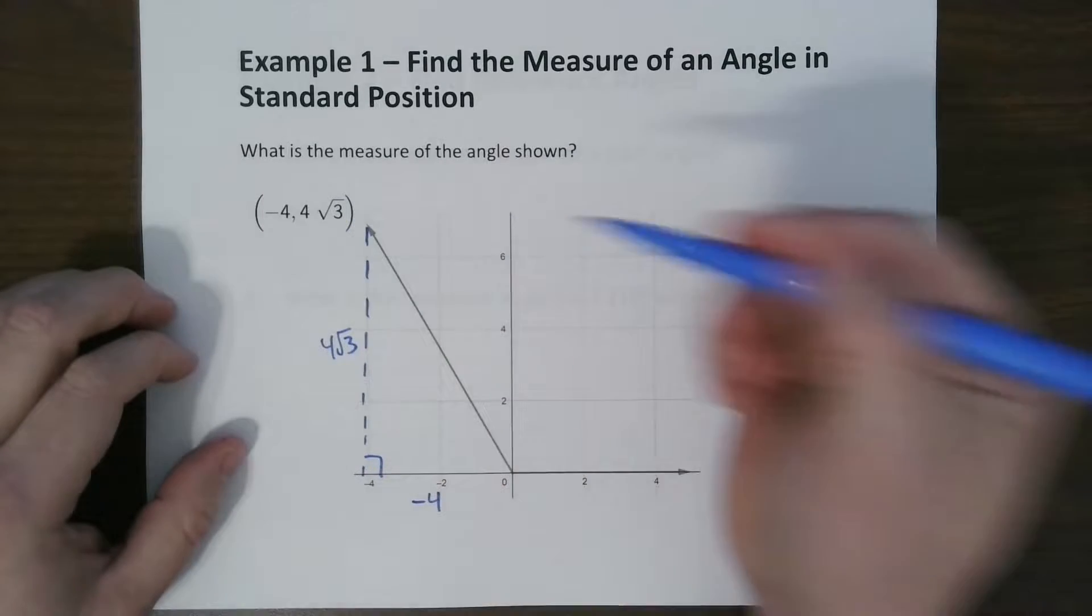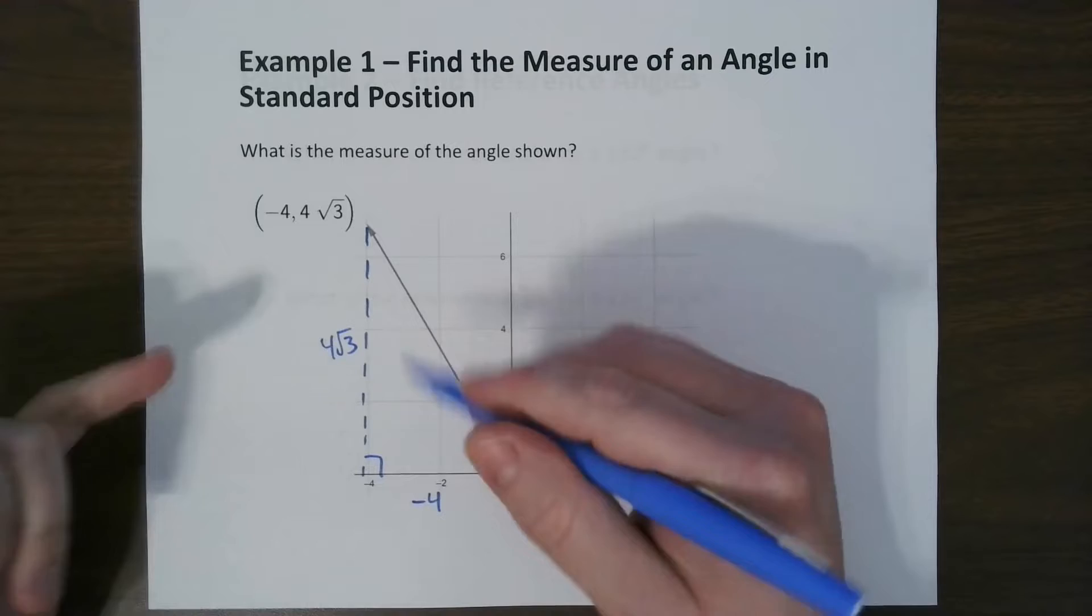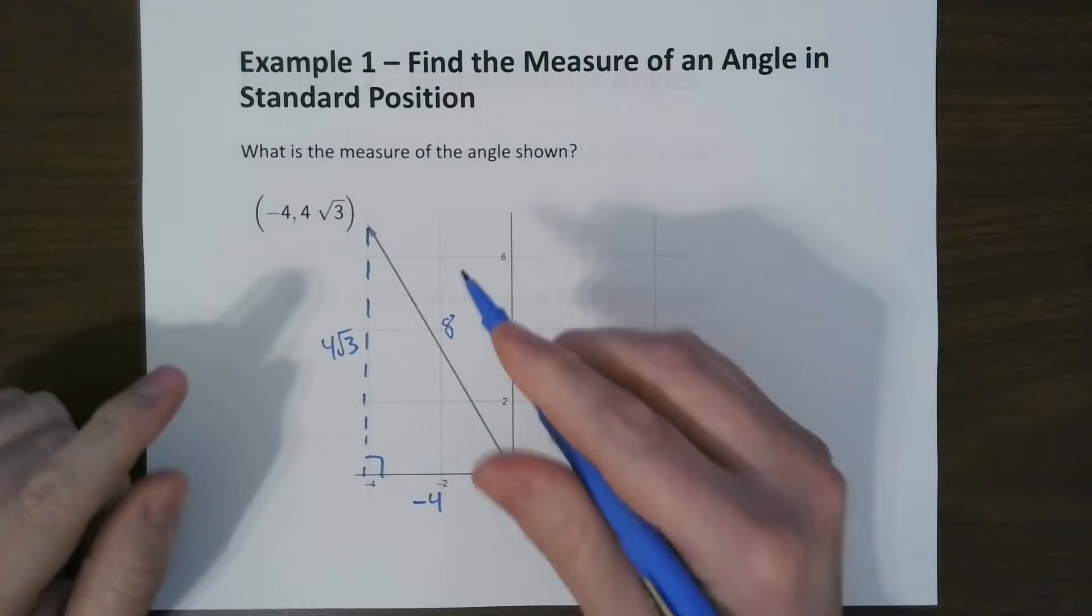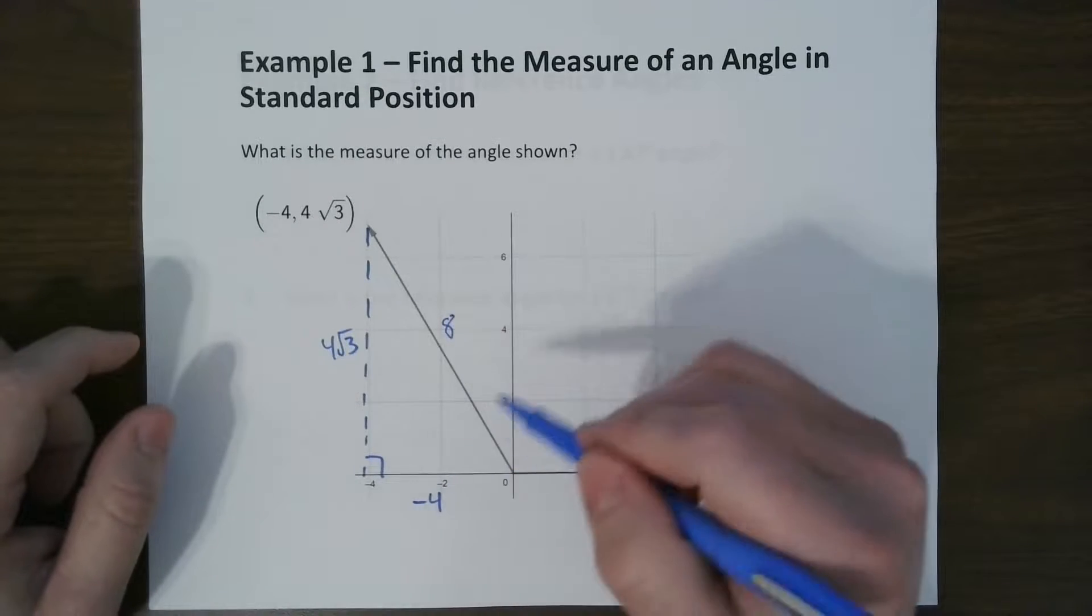And we know this is positive because of the point. And knowing that, we could actually, we see the pattern here. We know this is a length of 8 because it is a 30-60-90 triangle. How do we know that? Because of the radical 3 in there and the pattern that follows.